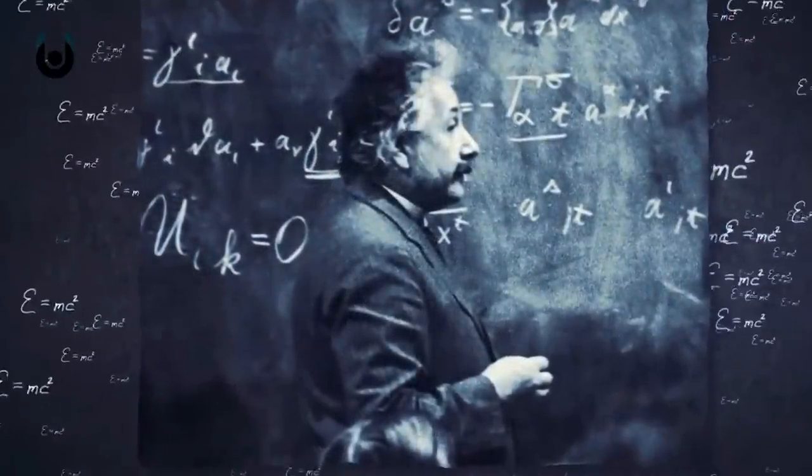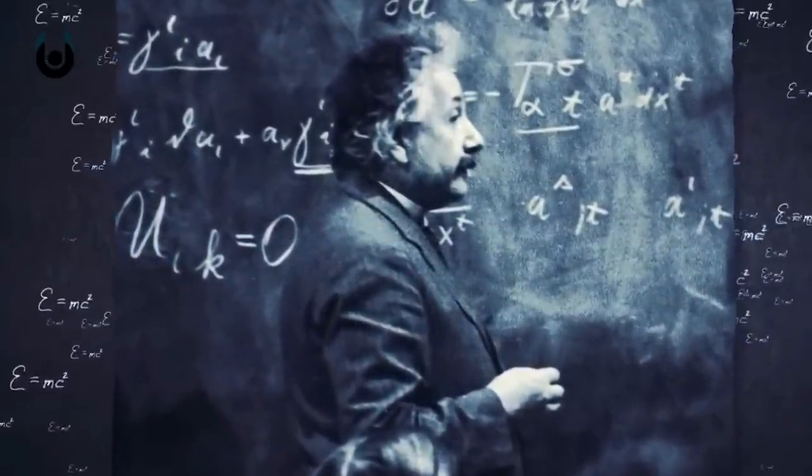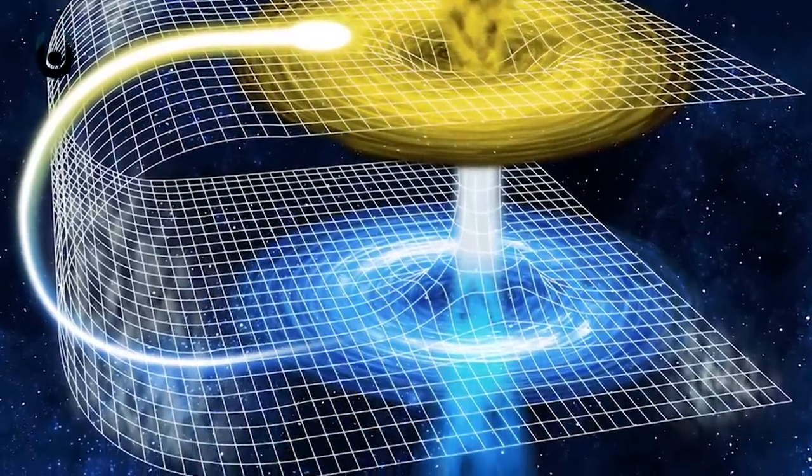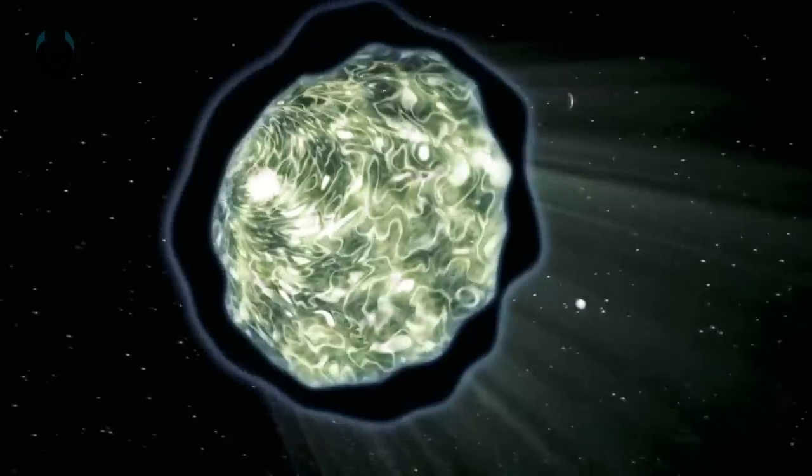Einstein's theory of general relativity allows unusual characteristics for black holes. For example, the central singularity might form a bridge to another universe. This is similar to a so-called wormhole,